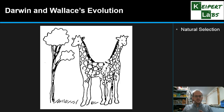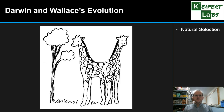Over generations, the giraffes have changed over time. We call this natural selection — there's a factor in the environment that causes certain features to make an organism more fit to survive than others. Those that survive can reproduce, and those are the genes and characteristics that get passed on, while those that die off — those traits die out — and organisms aren't like that anymore.